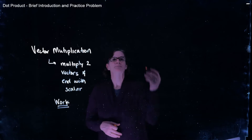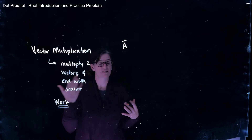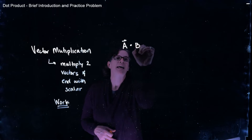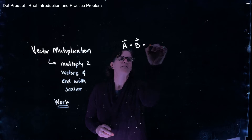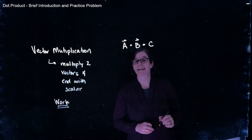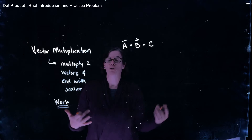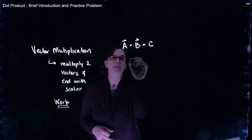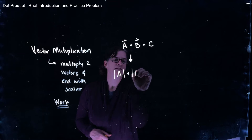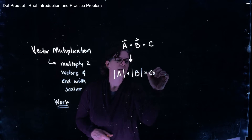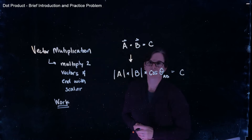Let's represent the dot product. If I want to have vector A and multiply it in the format of the dot product for vector B, I'm going to represent that with a heavy dot between vectors A and B. That gives me my resultant C, which is not a vector — it's a scalar quantity. The mathematical derivation is the magnitude of vector A times the magnitude of vector B times the cosine of the angle between the two vectors A and B.